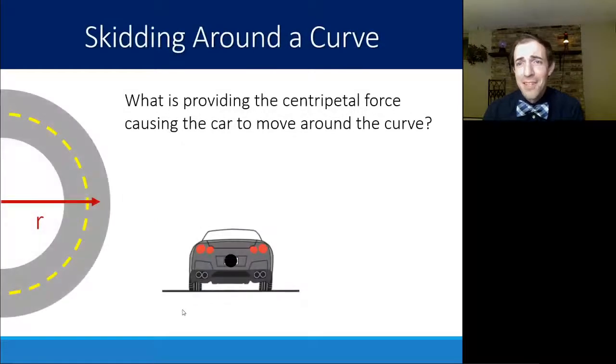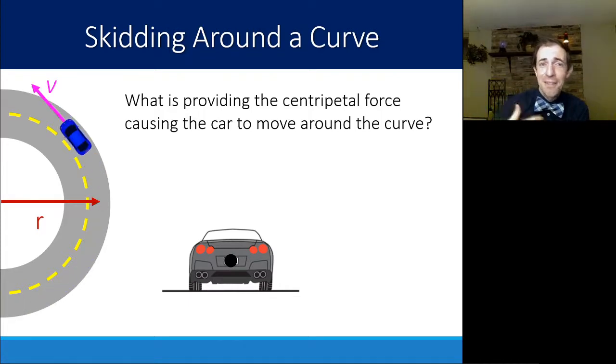So here's our scenario, and it's a scenario that many of you have probably been in before. You are driving in your car around a curve of a certain radius, moving at a certain velocity. You are moving in a circle even though you're not changing your speed necessarily. You are accelerating because you are changing your direction the whole time. Now, there is a force allowing you to change direction here.